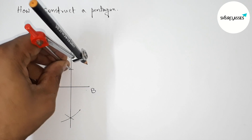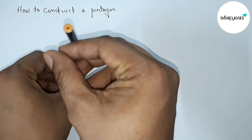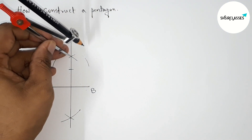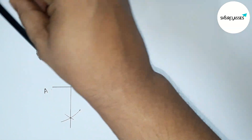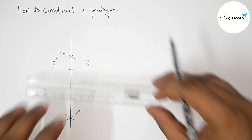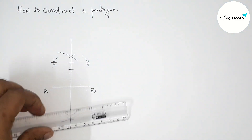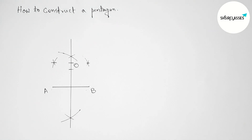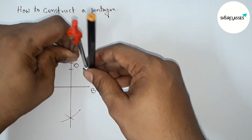Taking any length, drawing an arc here and drawing an arc again with the same length. Putting the compass here and cutting here and here. Joining this line, which meets at a point. Taking this intersection point as center O.